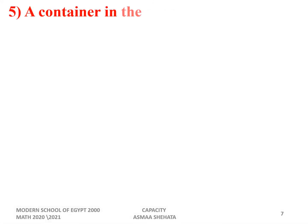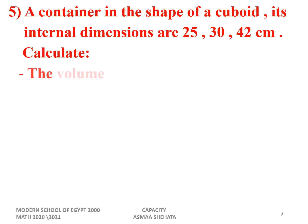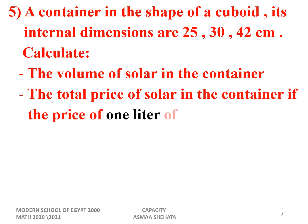A container in the shape of a cuboid has internal dimensions of 25 cm, 30 cm, and 42 cm. Calculate: first, the volume of solar in the container; second, the total price of the solar in the container if the price of one liter equals 1.2 pounds. Make a circle around 'liter.' We use the same steps: find the volume, convert to liters, then find the total cost.